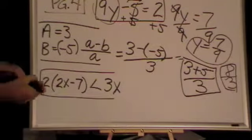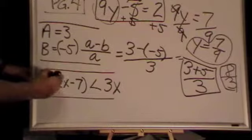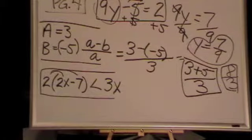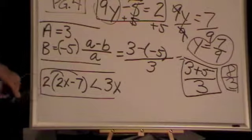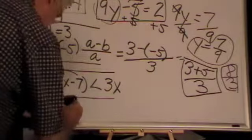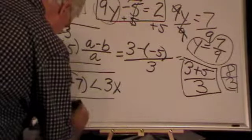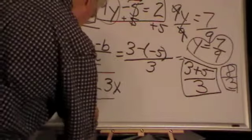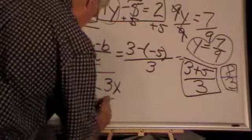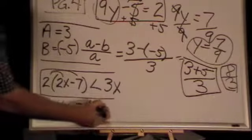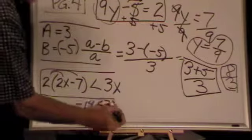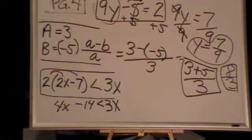What we do, we do the distributive function, distribution. Now what is 2 times 2x? Yeah, I know, 4x. Good. 2 times a minus 7? That's right, minus 14. And that is all less than 3x. Simple.